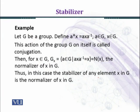Let's consider an example. Let G be a group. Define a star x equal to axa inverse. This action is conjugation, where a belongs to G and x also belongs to G.